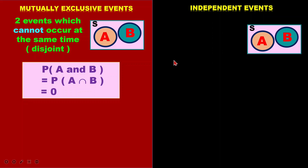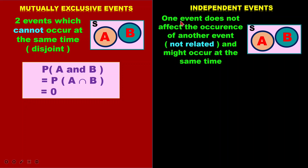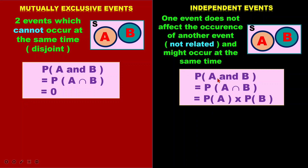For independent events, they are events that do not affect the occurrence of another event. They are two events that are not related, so if one occurs, it will not affect the other event happening. They can occur at the same time — therefore, we say event A and B can be intersected. So we take the probability of event A multiplied by the probability of event B.